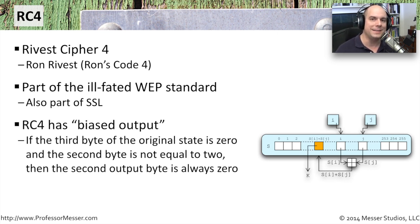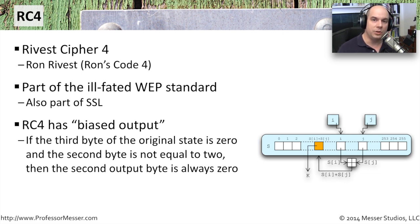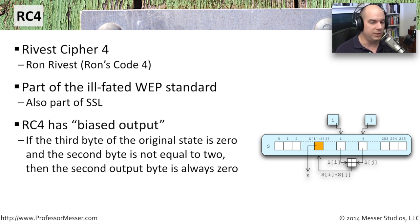RC4 has what we call a biased output. If the third byte of the original state is zero and the second byte is not equal to two, then the second output byte is always zero. By having these types of discoveries in the cipher itself, we found it was not as secure as we'd like. Although it was useful over wireless networks for a short time, once we started discovering these problems, we realized RC4 was not the symmetric cipher we wanted to use.